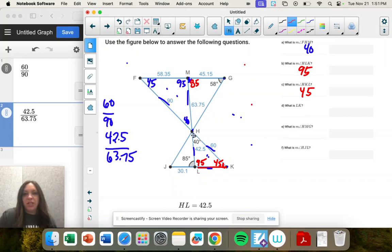So H, M, G. That is 85. And then H, J, L. So now we need this. So this would be our 58 right here.